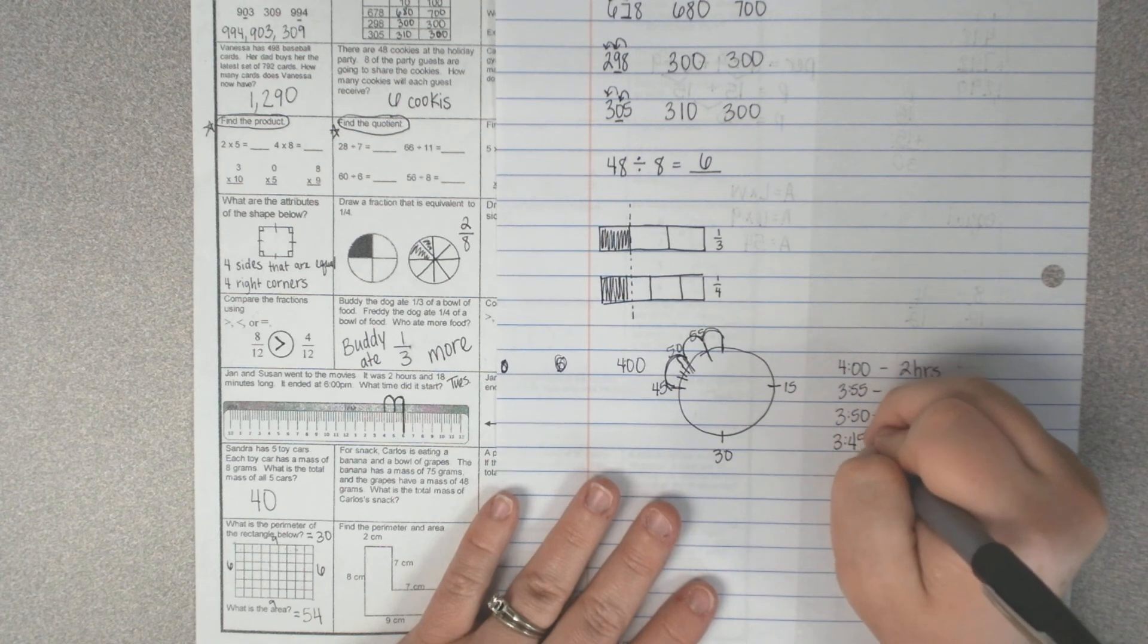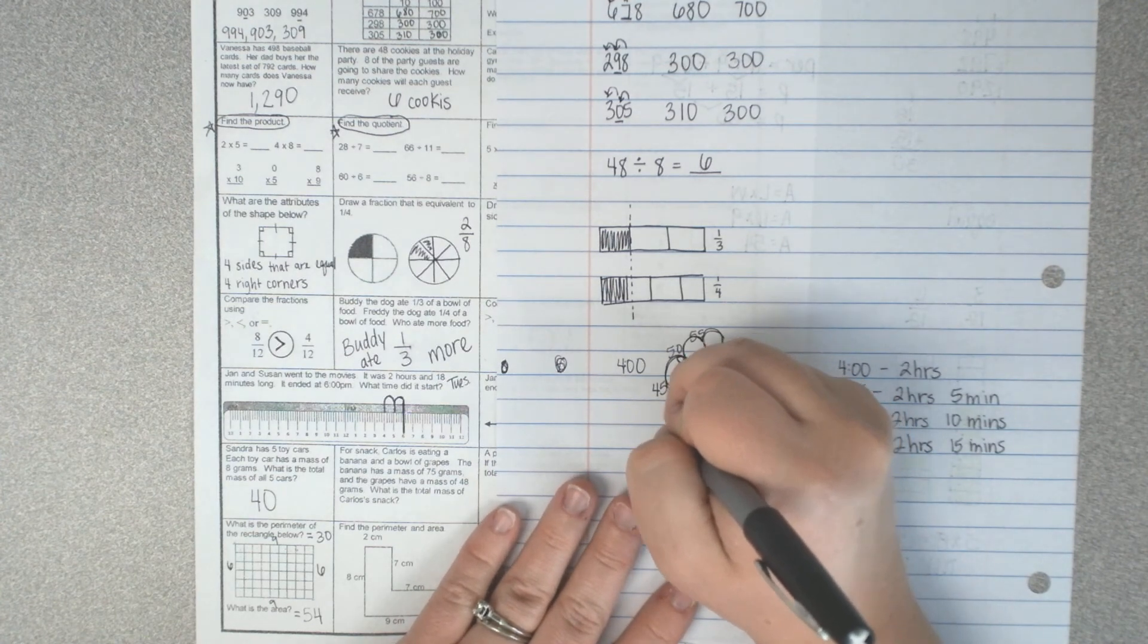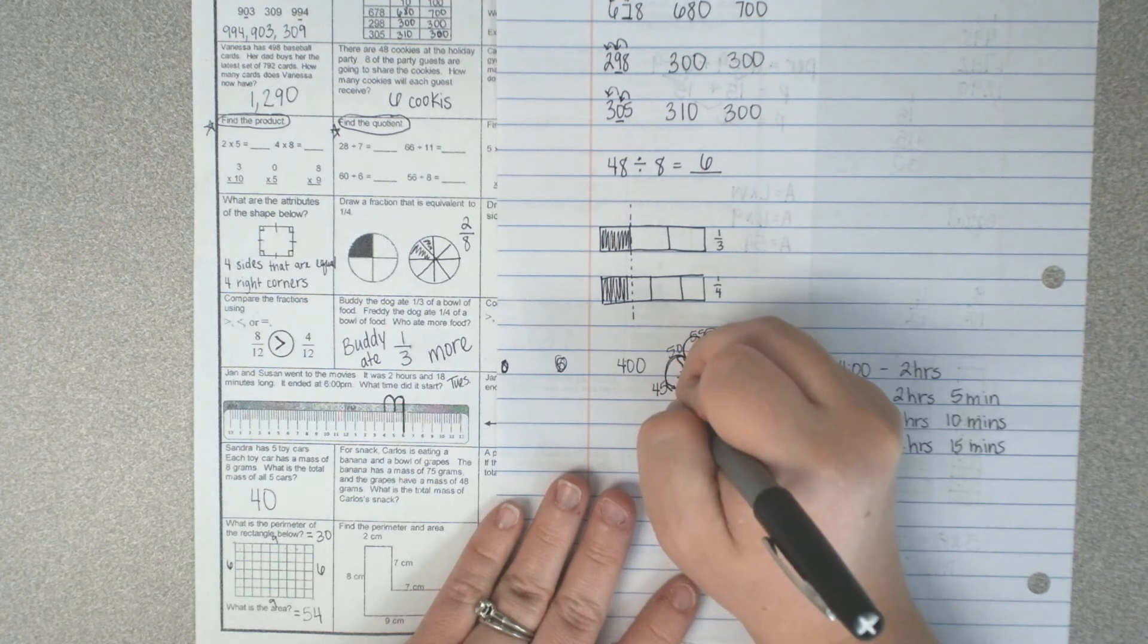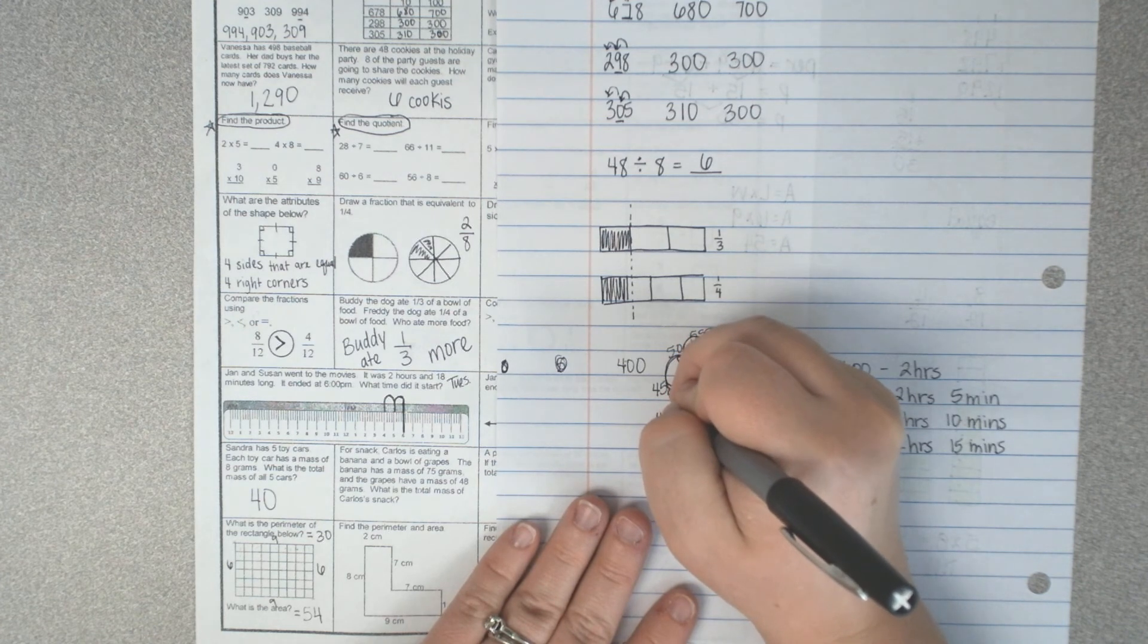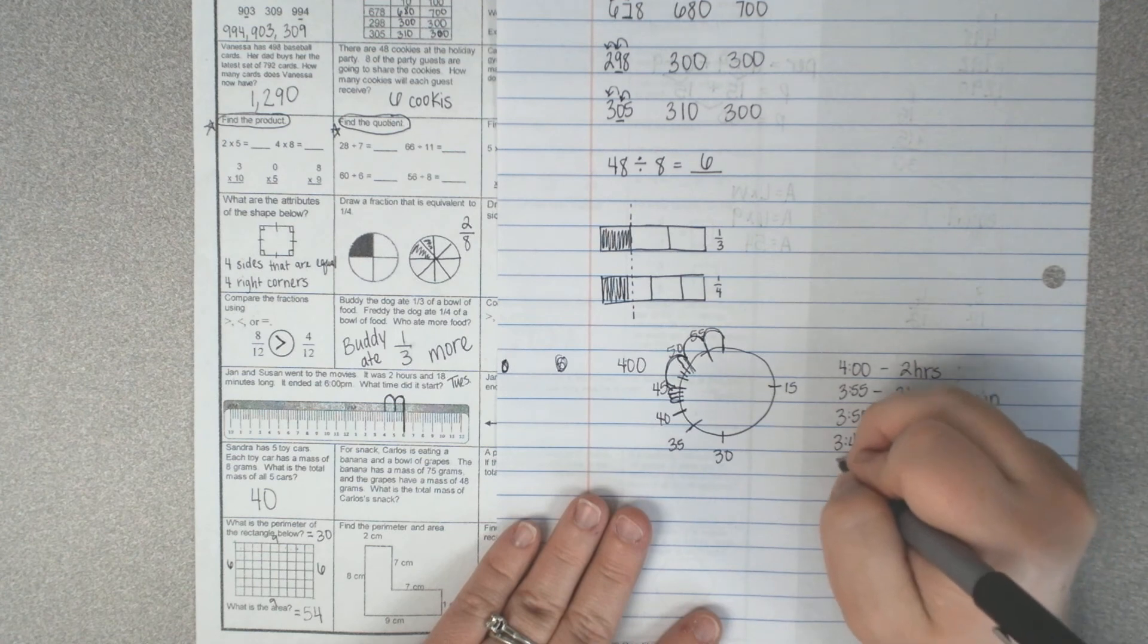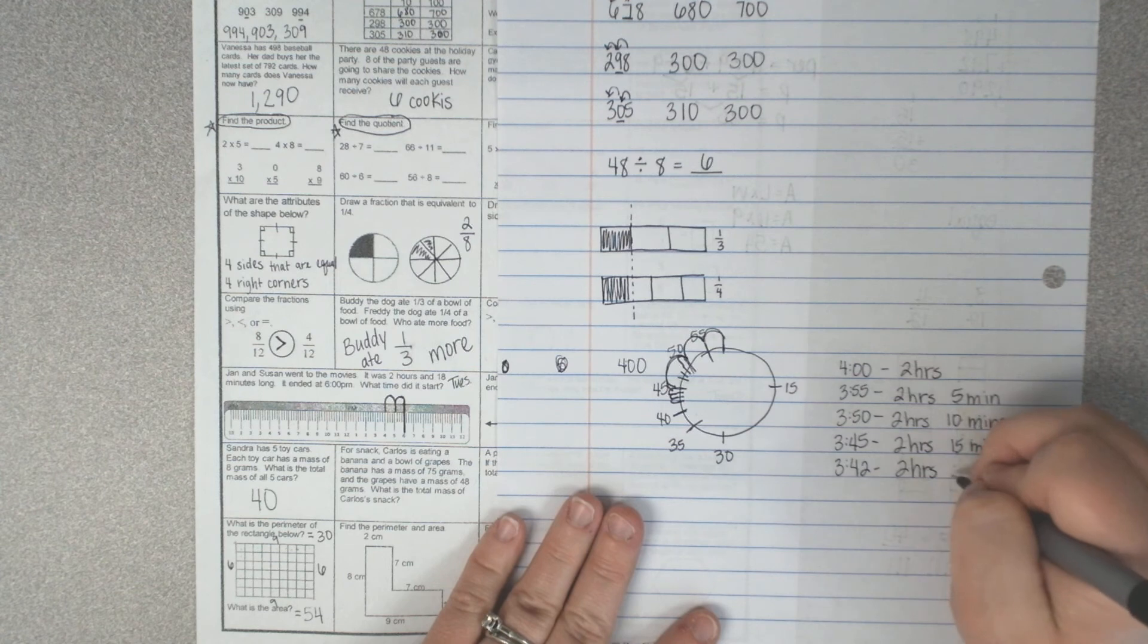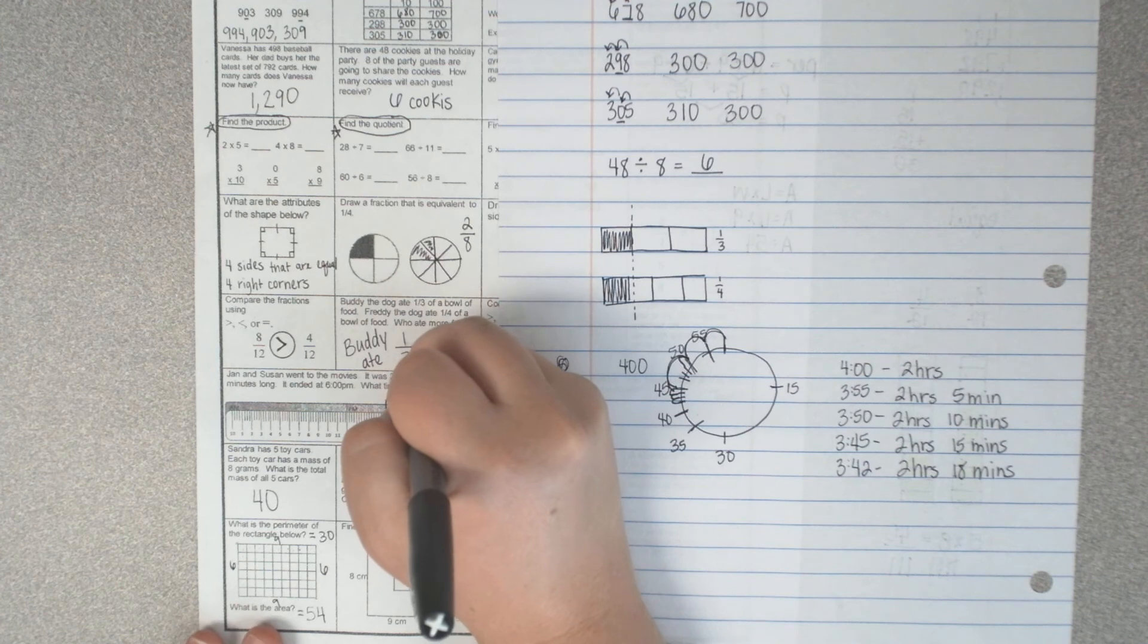It's at 3:45. Now I can go and count by ones. There's 40, 35, 40, 1, 2, 3. So 45, 44, 43, 42. So 3:42 is two hours and 18 minutes. That's not that bad. So she started at 3:42.